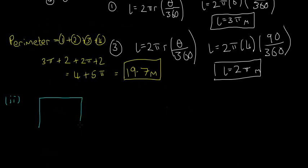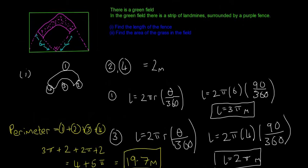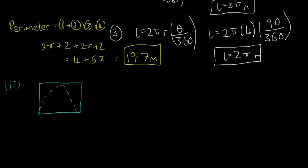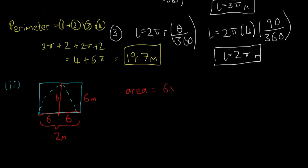First, the area of the entire field. The radius of the big circle is 6 metres, so the height of the field is 6 metres. The width across is 6 + 6 = 12 metres. So we have a rectangular field that's 6 metres by 12 metres. The area is 6 × 12 = 72 metres squared.